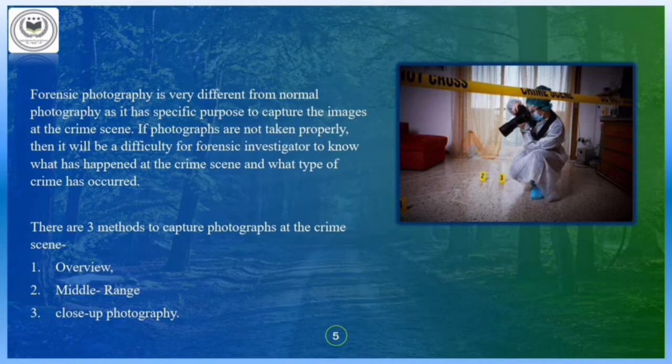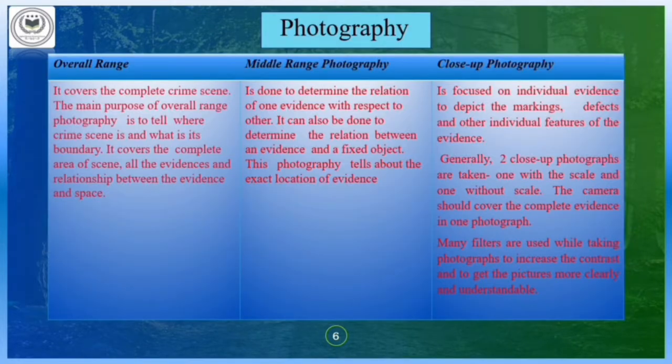To do this photography, we can capture images by three methods. The first one is overview, also called bird's eye view. The second one is middle range photography. The third one is close-up photography, also called evidence photography. Overall range photography covers the complete crime scene. Its main purpose is to tell where the crime scene is and what is the boundary — it defines the location. It covers the complete area of the scene including all kinds of evidence and the relation between the evidence and the surrounding space.